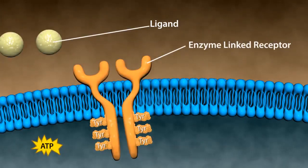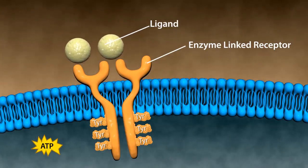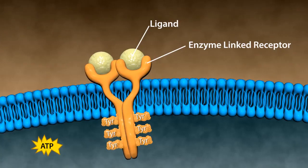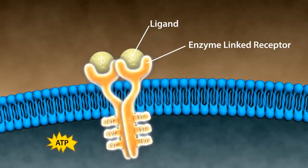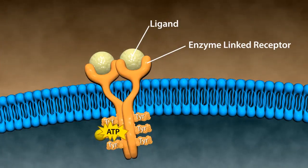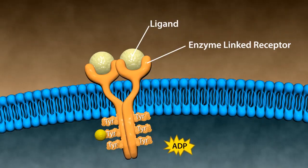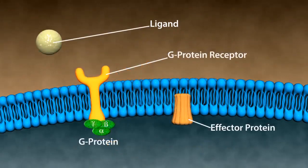In enzyme-linked receptors, the transmembrane protein of the receptor are enzymes, or closely associated with an enzyme. For example, tyrosine kinase receptor. The binding of the ligand induces dimerization of the receptor, which activates its tyrosine kinase activity through autophosphorylation and phosphorylates other intracellular enzymes sequentially. The phosphorylation status of the enzyme may result in activation or inactivation, resulting in various cellular responses.